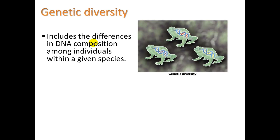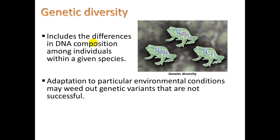Genetic diversity includes the differences in DNA composition among individuals within a given species. Just like there's variation in hair color among humans, there are also subtle and not-so-subtle variations within our biochemistry — the immune system and all the complexity of biochemistry in our bodies. It's good to have variation in immune systems, because a virus particularly deadly to some individuals won't kill off the entire population. We see that a lot with crops: when you grow a single species where all plants are genetically very similar, a fungus or mold can wipe out an entire field.